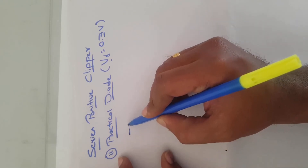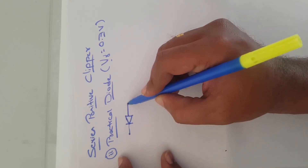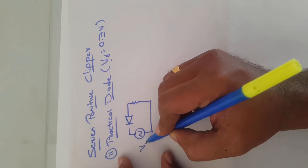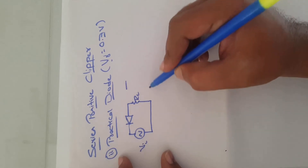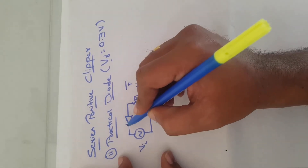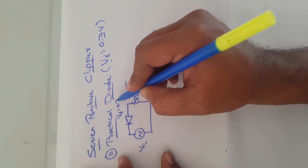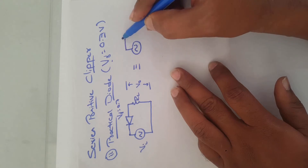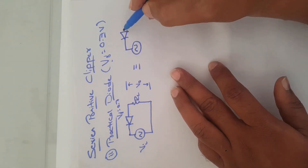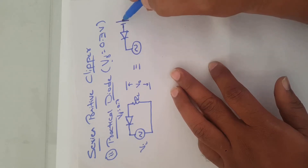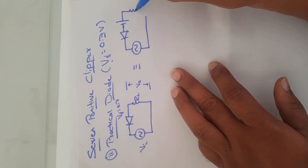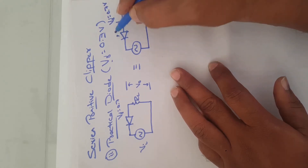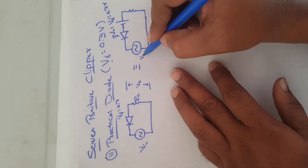Consider a practical diode made of silicon connected in series with the source. The input voltage is VI and the output voltage V-naught is across the load resistance RL. This practical diode has a cut-in voltage of 0.7 volts. A practical diode can be represented as an ideal diode in series with a DC source whose magnitude equals the cut-in voltage, that is 0.7 volts.